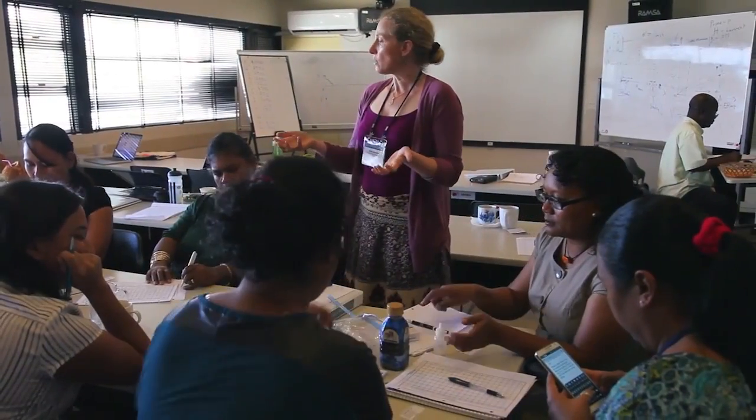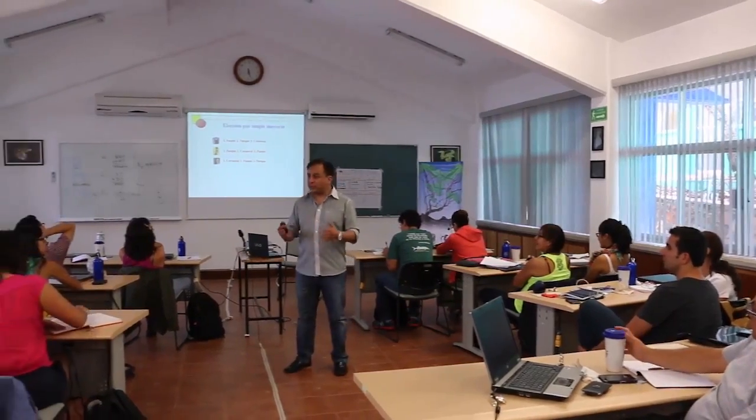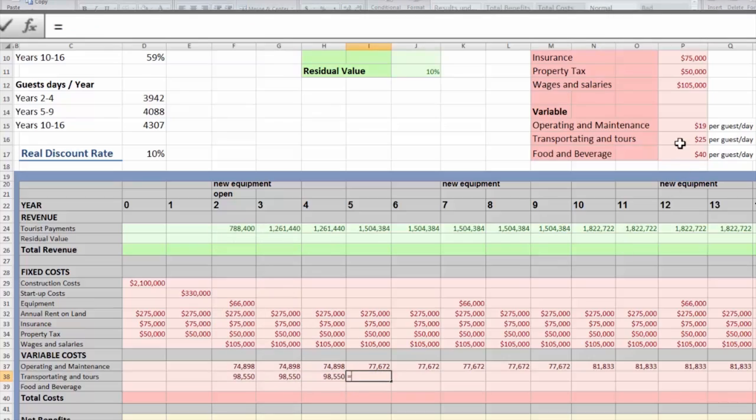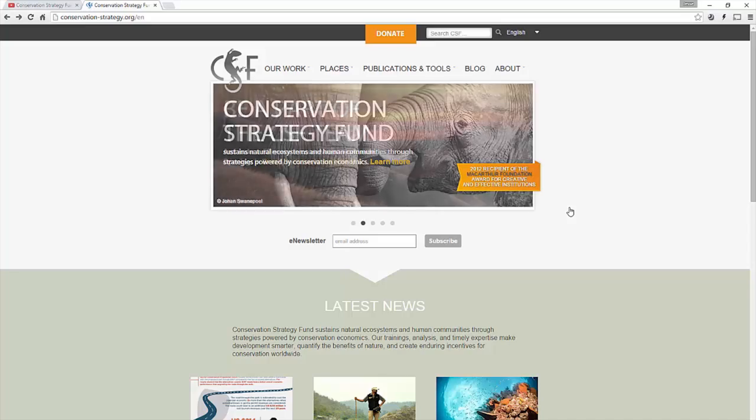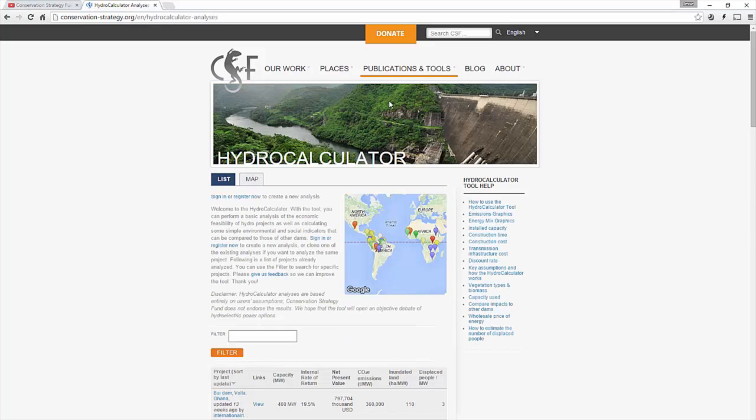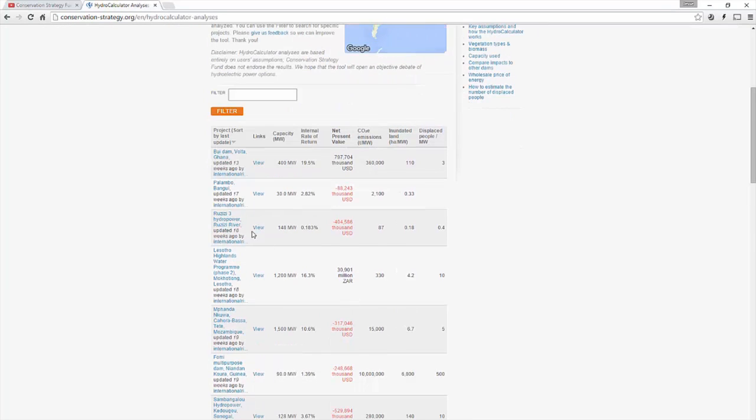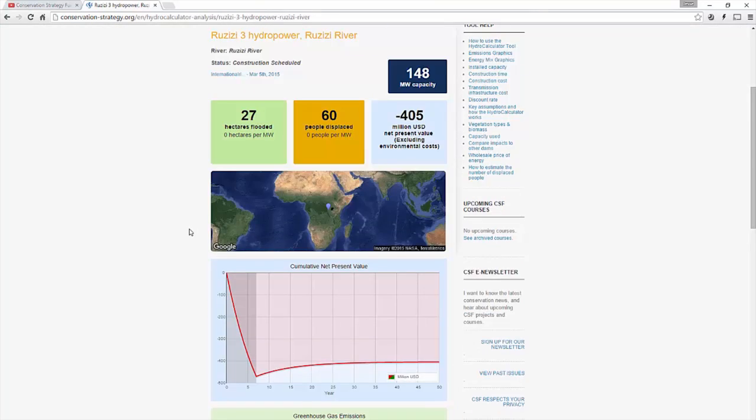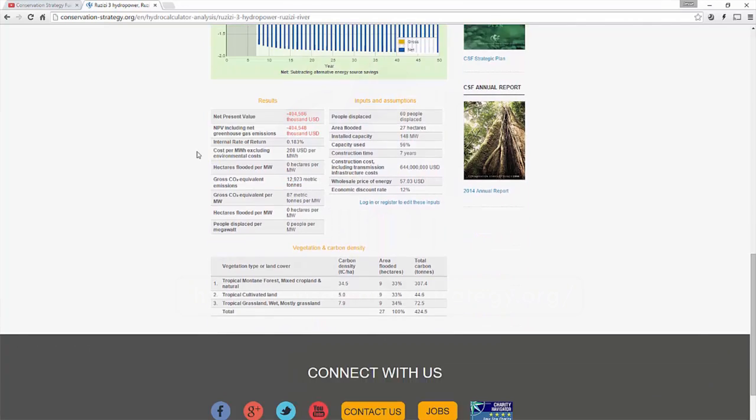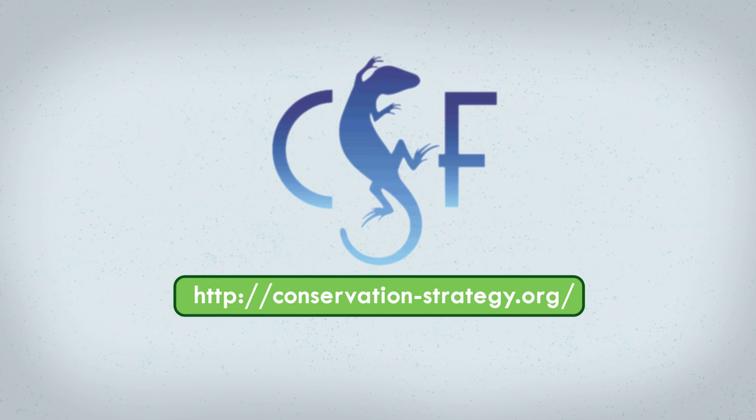Conservation Strategy Fund offers economics training focusing on comprehensive cost-benefit analysis of infrastructure development to determine a project's real trade-offs and feasibility. They also offer online tools like the hydrocalculator and roads filter so anyone can calculate the potential impacts of hydroelectric dams and road projects worldwide. For more information go to conservation-strategy.org